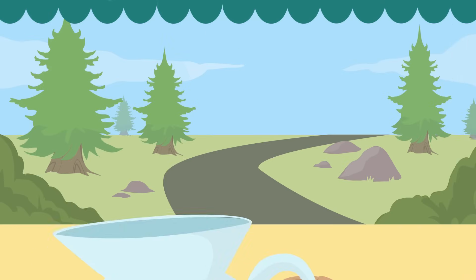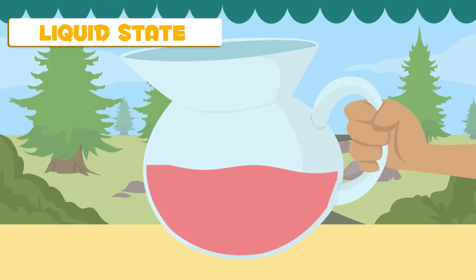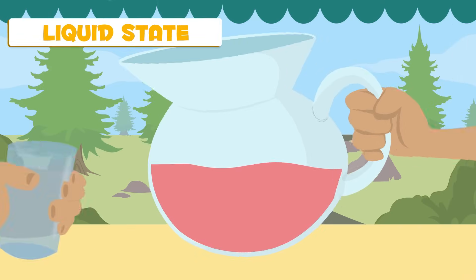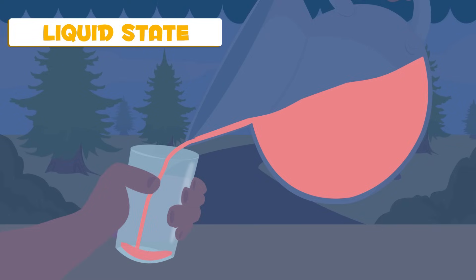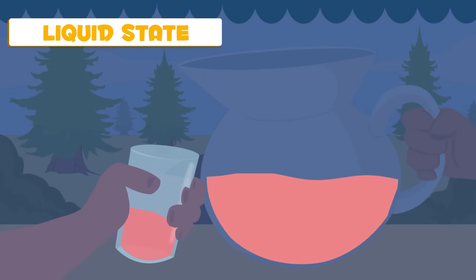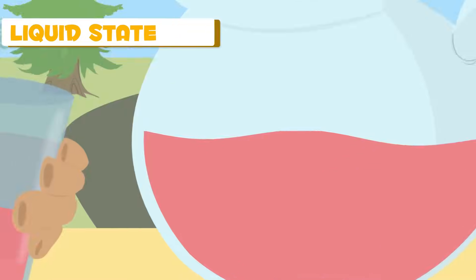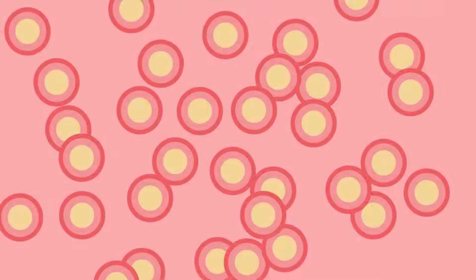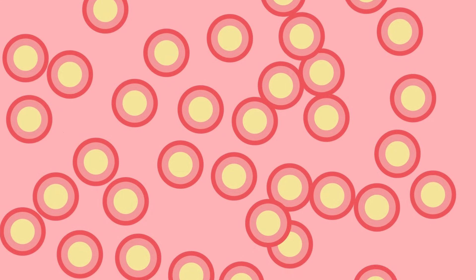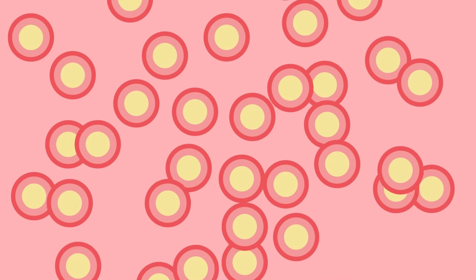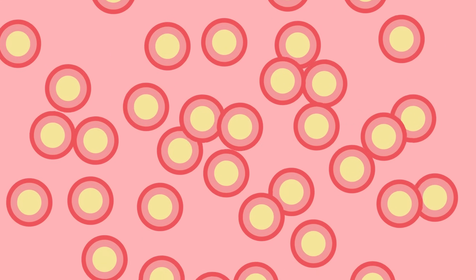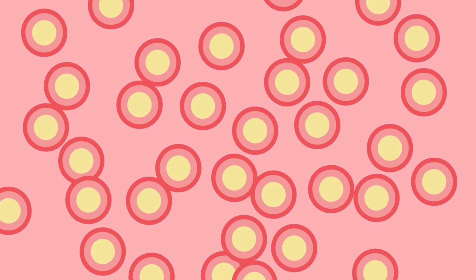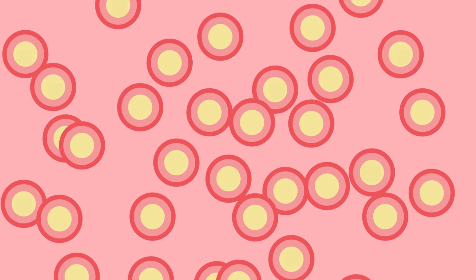Everything we drink is in its liquid state. Matter in its liquid state takes on the shape of the container, and its volume always stays the same. Particles are separated and can move freely. Can you see how they're moving? They look like they're dancing!